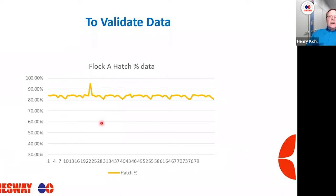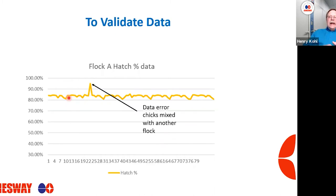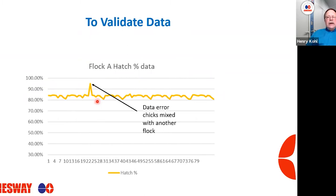Here's another example looking at hatchability on a flock. We're running mid to low 80s and all of a sudden we're in the mid 90s. What happened? We had a data entry error — chicks got mixed with another flock. This happens in a hatchery. If you want to have accurate data and accurate results, you can't include that data. You need to get that fixed.